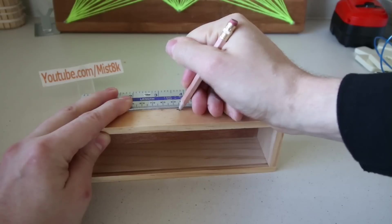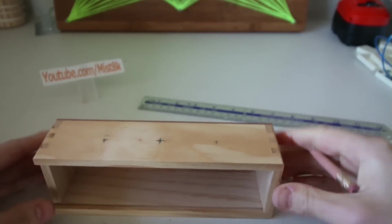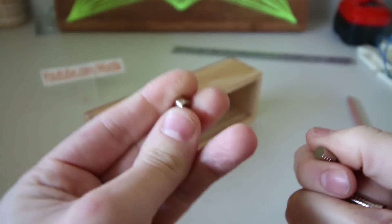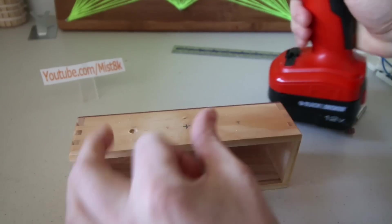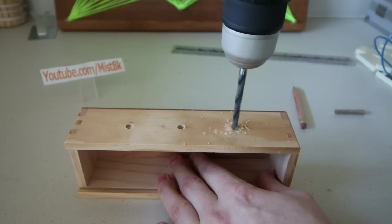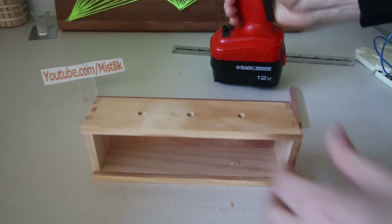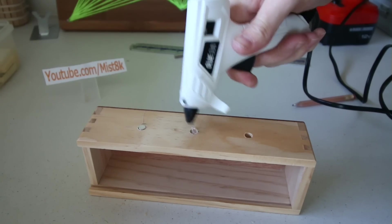I marked out three equal spots underneath the box where I'll be creating indents to insert these small neodymium magnets. The indents need to be wide enough to fit the magnets. There we go. I then used hot glue to stick in the magnets.